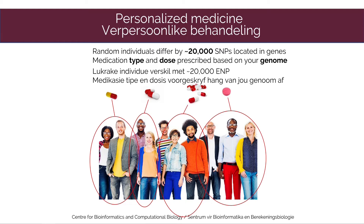If you look at the SNP profile of an individual, you should be aware that the genomes of individuals can differ by as many as 20,000 SNPs. This has an effect on the pharmacogenomic profile of that individual — some individuals are responsive to medicine A, some do not respond to medicine A but to medicine B, some require much higher dosages. Depending on your SNP profile, this should inform decisions in terms of therapies and therapeutic doses. This is a very actively researched area in bioinformatics today.